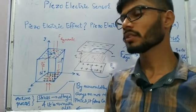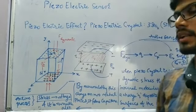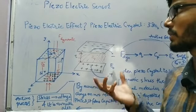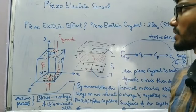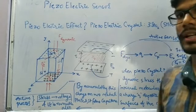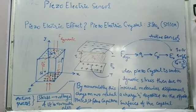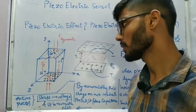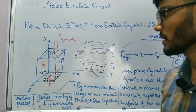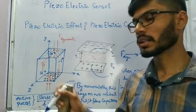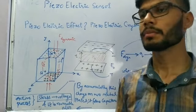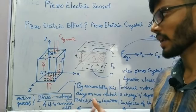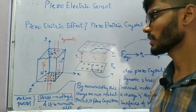The piezoelectric effect comes from a specific type of material called piezoelectric crystal. I have taken silica (3SiO2) as an example, and I have drawn a three-dimensional structure of one particular piece of the crystal. The crystal is going to have multiple pieces like this, and we cannot guarantee how many pieces are inside the crystal.